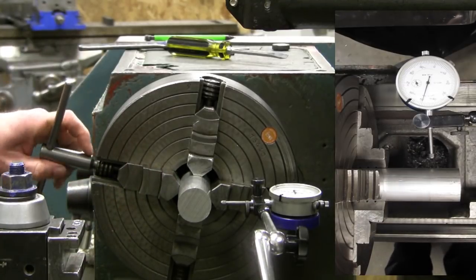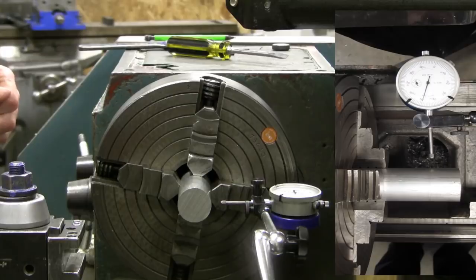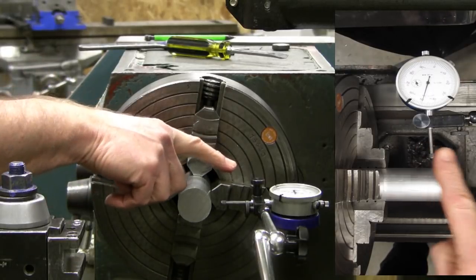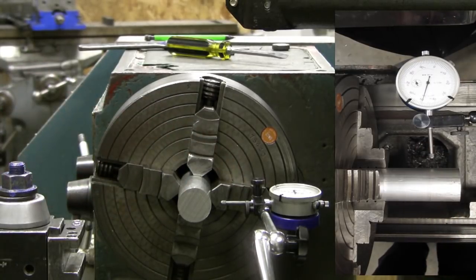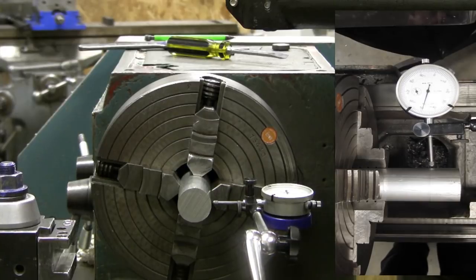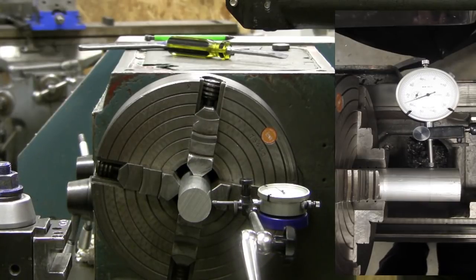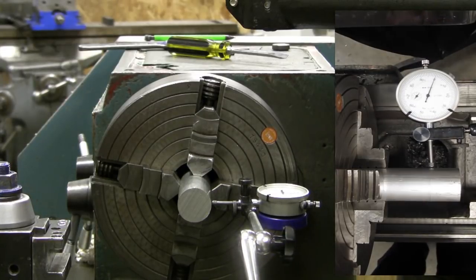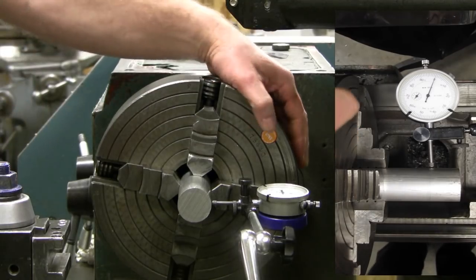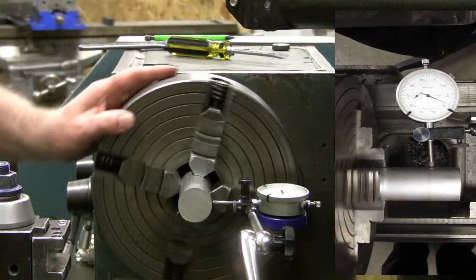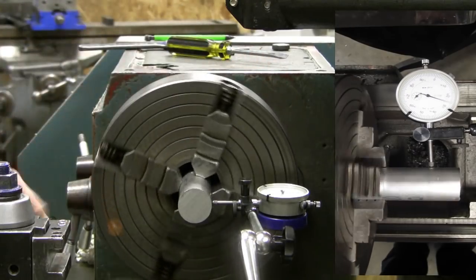Now this indicator is on a magnet base which is on the cross slide. I'll pull the cross slide back and it engages the part. A couple of turns on the needle and then we'll rotate this and see how far off it is.